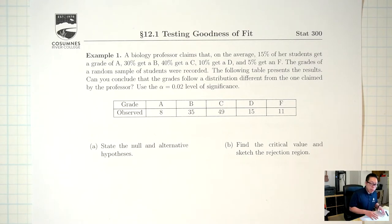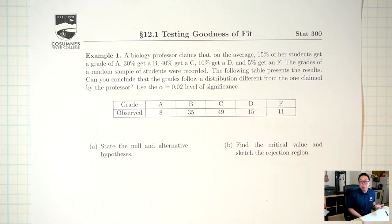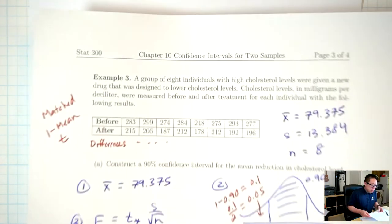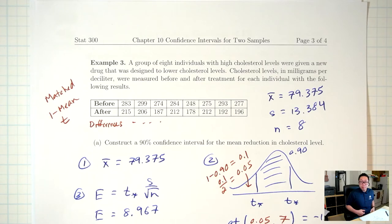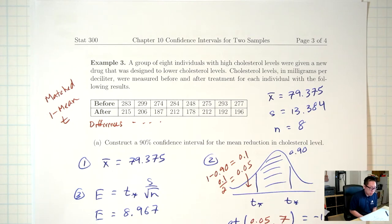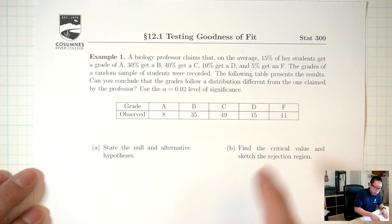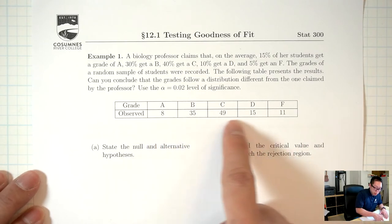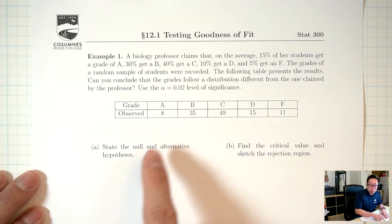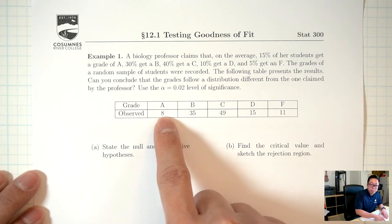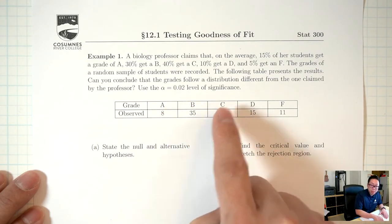What's different about this data compared to the data tables we've seen in the past? A typical data table from past lectures had measurements on individual people — for example, cholesterol levels on eight different people. But that's not what we have here. These numbers are counts — counting how many people got an A, how many got a B, how many got a C, and so on.